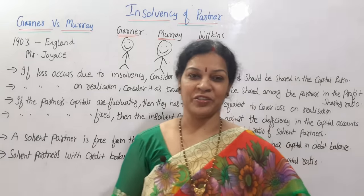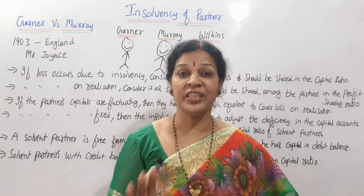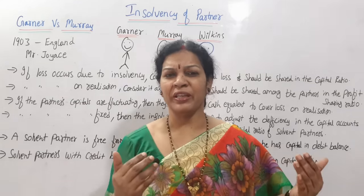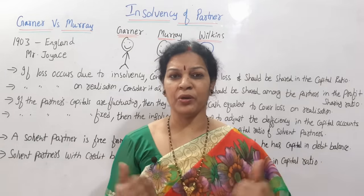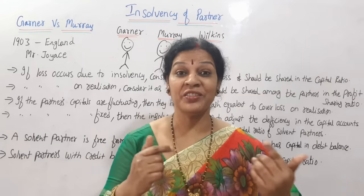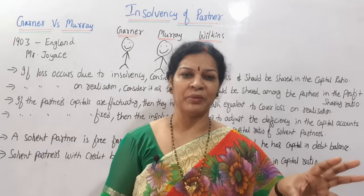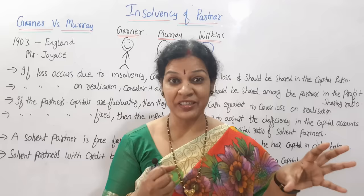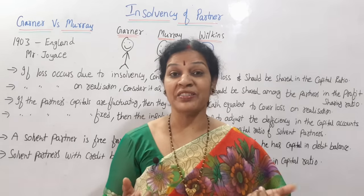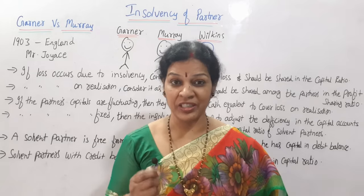Coming to the insolvency of partnership - you know that in our Partnership Act 1932, it has not mentioned anything about insolvency of partner. So whenever any partner becomes insolvent, what to do and how to handle it - generally it will be written in the partnership deed. If it is not written, that's a different question. Generally they'll write in the partnership deed that if any partner becomes insolvent, that deficiency will be shared by the solvent partners.